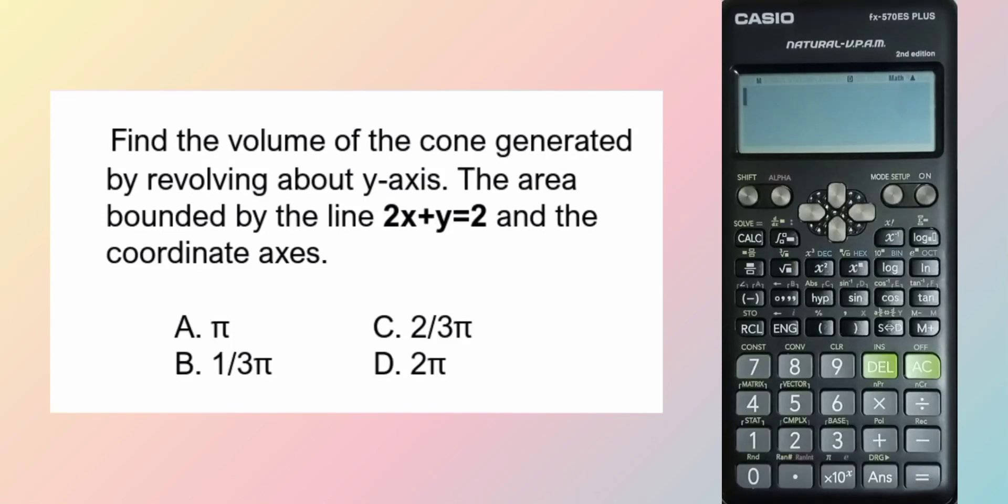Find the volume of the cone generated by revolving about the y-axis, the area bounded by the line 2x plus y equals 2 and the coordinate axes. So the three lines make a triangle, and this triangle is to be revolved about the y-axis to form a cone.